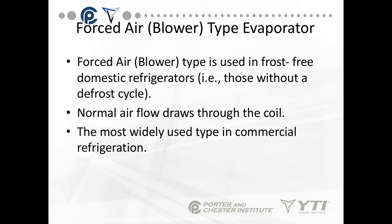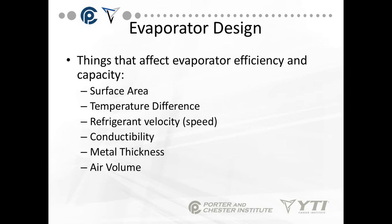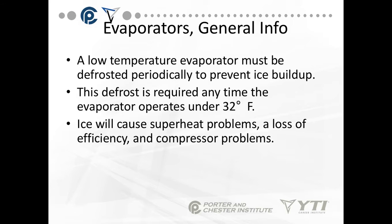The forced air blower type is used in frost-free domestic refrigerators and is also the most widely used type in commercial refrigeration. An evaporator has two purposes: it cools by removing sensible heat, and it dehumidifies by removing latent heat, causing a change of state from vapor to water. Factors affecting evaporator efficiency include surface area, temperature difference, refrigerant speed through the evaporator, metal conductability and thickness, and air volume. A low temperature evaporator must be defrosted periodically — a defrost cycle is required any time the evaporator operates under 32 degrees, not the box temperature.